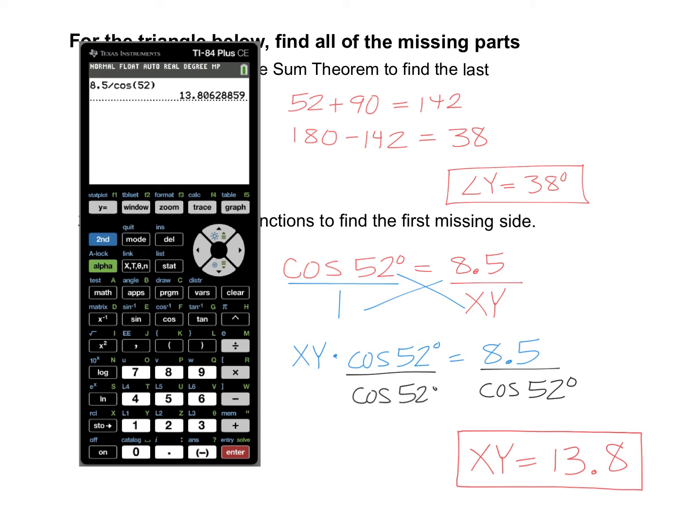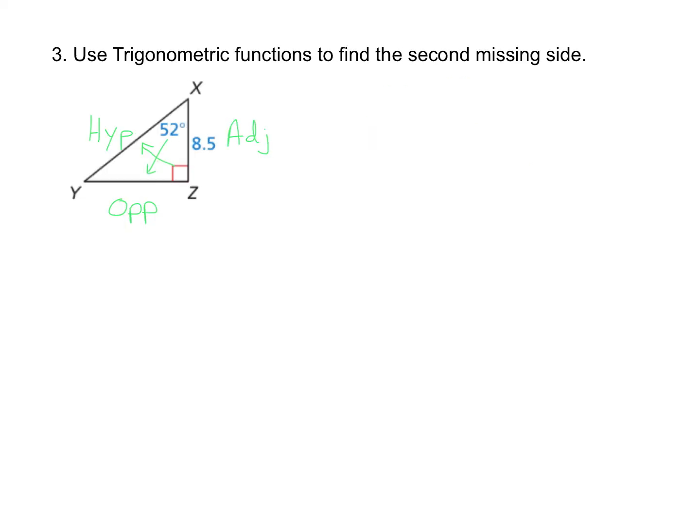And now we're ready to find the second missing side. To find side YZ, let's use the values that we know for certain. I know we just calculated the hypotenuse XY, and we got about 13.8. However, that's a rounded number.